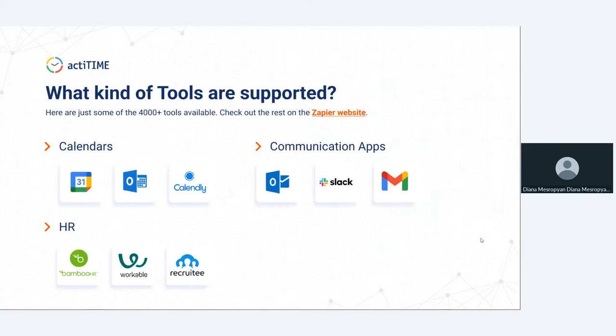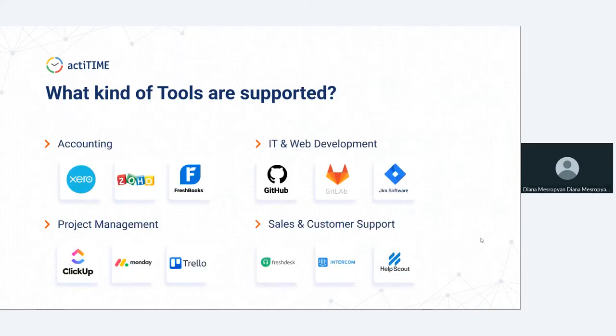We have categories like calendars — Google Calendar, Outlook Calendar, Calendly. We have communication and email apps, chats such as Slack. We have HR tools such as BambooHR, Workable, and Recruitee — many of you use those alongside ActiTime. There are also categories covering accounting, which is popular since many of you use ActiTime data for payroll or billing purposes.